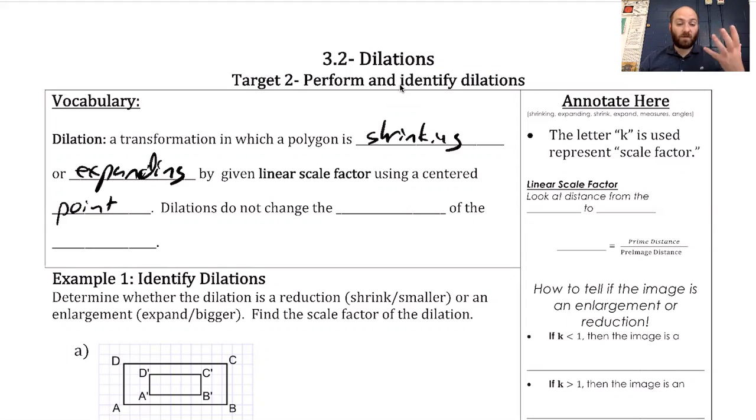Dilations do not change the measures of the angles. Even though the sides are changing, the shape is staying the same. If I take a triangle and expand it, it's going to be still a triangle. Those angles stay the same though.